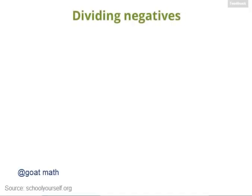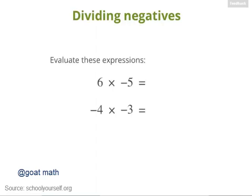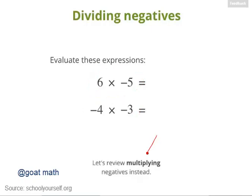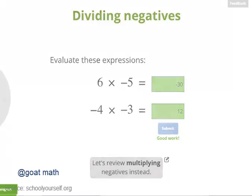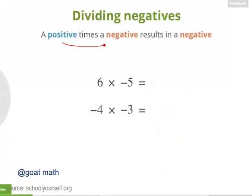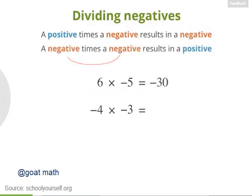Here we'll figure out some rules for dividing negative numbers. But first, let's multiply a few negatives. What's 6 times negative 5, and negative 4 times negative 3? Multiplying a positive and a negative gives you a negative, so 6 times negative 5 is negative 30. And multiplying two negatives together gives you a positive, so negative 4 times negative 3 is positive 12.